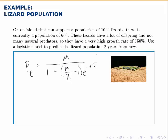Here's the general logistic model. In this case, M is 1,000, P sub 0 is 600, R is 1.5, and we can plug in all the pieces to get the specific model for this example.